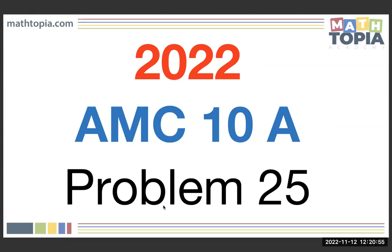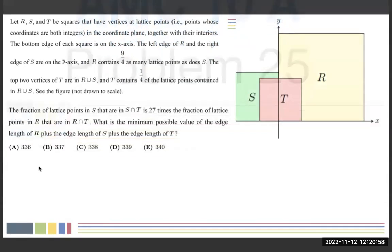This is the 2022 AMC 10A, problem number 25. Let R, S, and T be squares that are vertices at lattice points — points whose coordinates are both integers — in the coordinate plane, together with their interiors. The bottom edge of each square is on the x-axis. The left edge of R and the right edge of S are on the y-axis, and R contains 9/4 as many lattice points as does S. The top two vertices of T are in R union S, and T contains one fourth of the lattice points contained in R union S. The fraction of lattice points in S that are in S∩T is 27 times the fraction of lattice points in R that are in R∩T. What is the minimum possible value of the edge length of R plus the edge length of S plus the edge length of T?